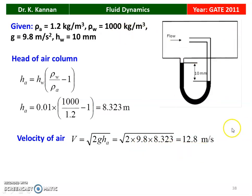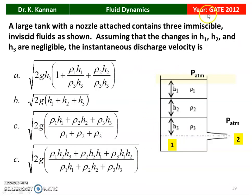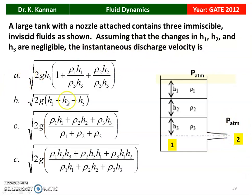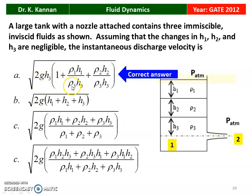Velocity of air in the pipeline is 12.8 meters per second. Next question from Gate 2012. A large tank with a nozzle contains three immiscible inviscid fluids with heads H1, H2, H3 and densities ρ1, ρ2, ρ3. Atmospheric pressure acts at the top and at the nozzle exit. Assuming changes in H1, H2, H3 are negligible, the instantaneous discharge velocity is: V = √[2G·H3·(1 + ρ1·H1/(ρ3·H3) + ρ2·H2/(ρ3·H3))].